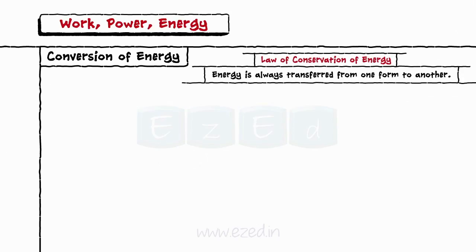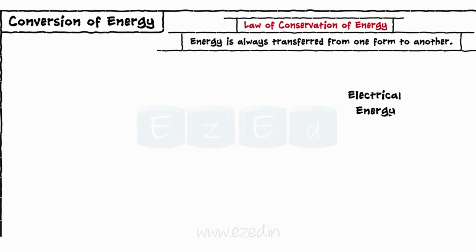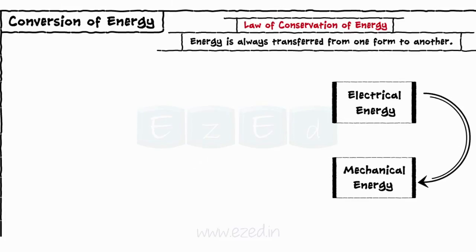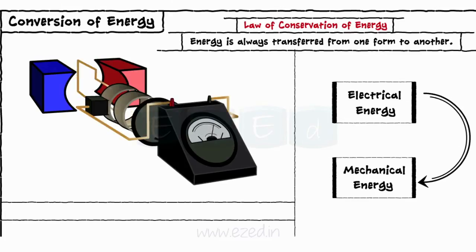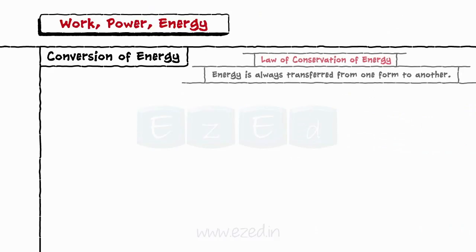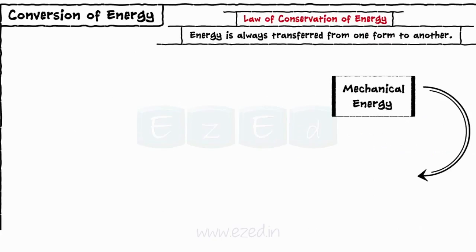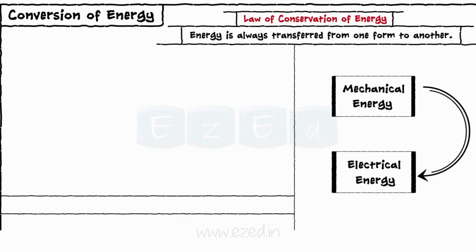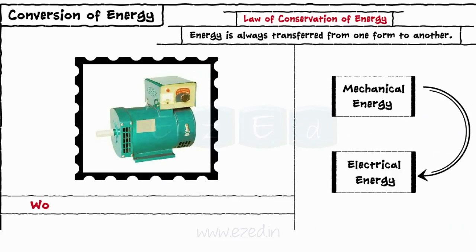The third conversion type is electrical energy into mechanical energy, and its example is an electric motor which works on the principle of electromagnetic induction. The fourth conversion is mechanical energy to electrical energy, and its example is an electric generator, which also works on the principle of electromagnetic induction.